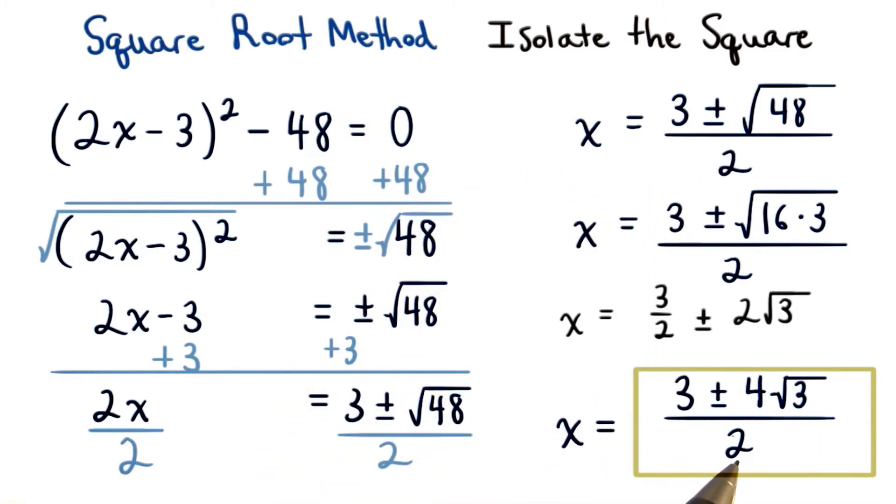Keep in mind, you could divide 2 into each of these terms. This would give us x equal to 3 halves plus or minus 2 root 3. If you list your answers like this, or if you list your answers like this, they're both correct.